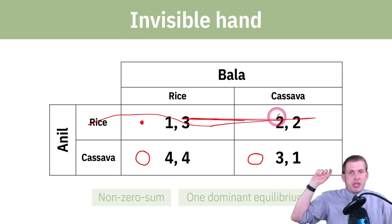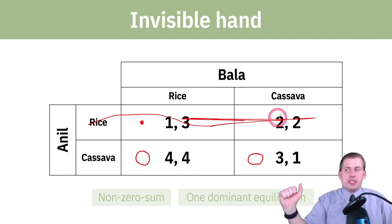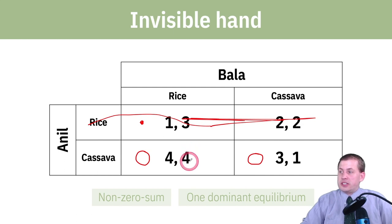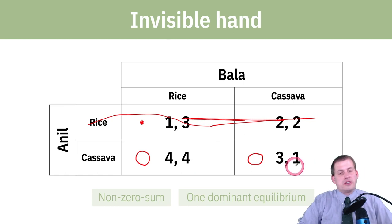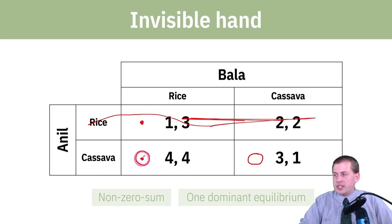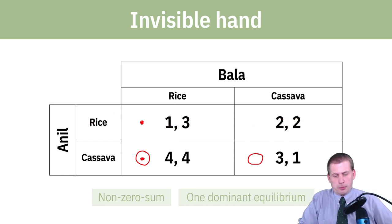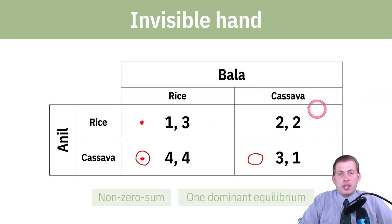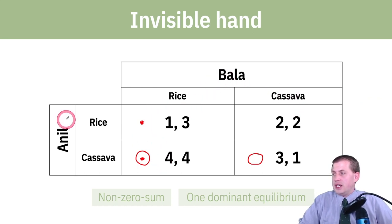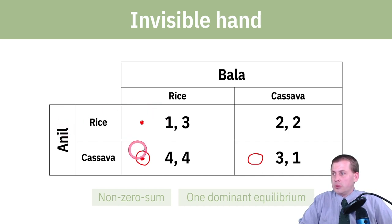If Bala says Anil is going to grow cassava, what should I do? Bala looks at the payoffs: he could get four utils if he grows rice, or one util if he grows cassava. The highest payoff is rice, so we put a dot there — he's going to grow rice. So Bala, regardless of what Anil chooses, will always grow rice; and Anil, regardless of what Bala decides to do, will always grow cassava.